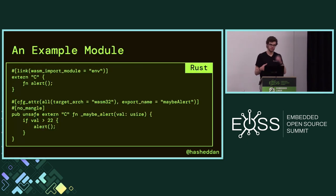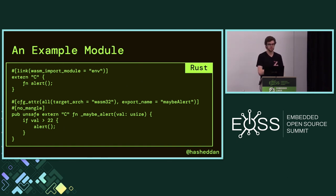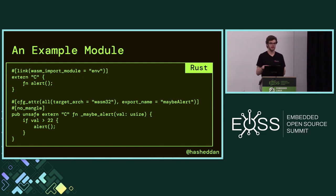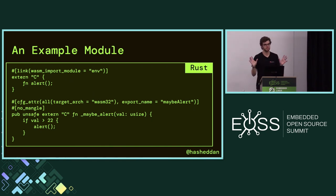Let's start off with an example module. One of the things that's going to be a common theme throughout this presentation is that a WASM module can be targeted by really any language. We're going to be using Rust as an example today. This is a very simple module — we have a single function defined called maybe_alert. It takes a value, compares it to a constant value, and if it's over that value, it triggers an alert function which is provided by the host environment. The alert function takes no arguments and returns no values — it's provided by the embedder.